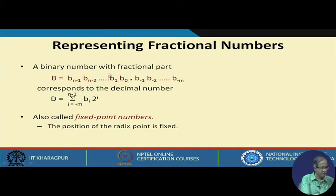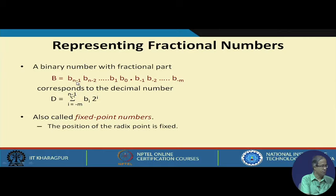If you want to convert this binary number into the equivalent decimal, recall that every binary position has a weight: b0 has a weight of 2 to the power 0, b1 has a weight of 2 to the power 1, and similarly on the fractional side, b minus 1 has a weight of 2 to the power minus 1, b minus 2 has a weight of 2 to the power minus 2, and so on. You can write the decimal equivalent as the digit multiplied by the weight 2 to the power i, where i varies from minus m up to n minus 1. This kind of representation is also called fixed point numbers because the position of the radix point is fixed in the number representation.